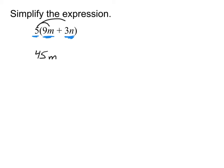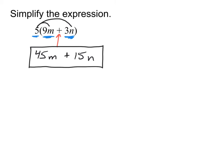Now I also multiply the five by the 3n: five times 3 gives me 15, and the n stays as n. Whatever sign is there carries through, and since that was a plus, it's a plus on the next line as well. So the final answer is 45m plus 15n. That is as good as we can make it because the two terms have different variables — one is an m and the other is an n.